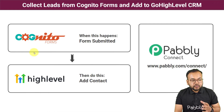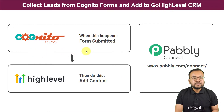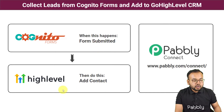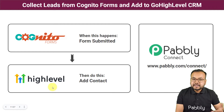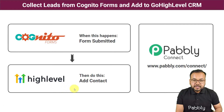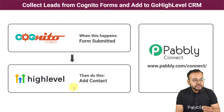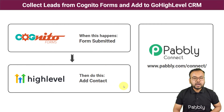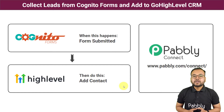We have taken the example of Cognito Forms to build a sign-up form. As and when any person fills that sign-up form, we are going to add the same person as a contact in GoHighLevel, which is a sales and marketing tool that can also be used as a CRM. To make this happen we are using Pabbly Connect, which is an integration and automation tool. The best part is you will not require any coding skills or programming knowledge, so anyone can set up this automation very easily.